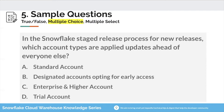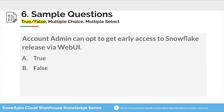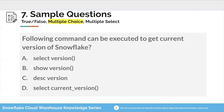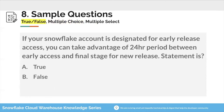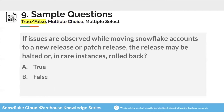Question 5: In the Snowflake staged release process for new releases, which account types are updated ahead of everyone else? Question 6: Account admin can opt to get early access to the Snowflake release via web UI — true or false? Question 7: Which following command can be executed to get the current version of Snowflake? Snowflake has control functions to get metadata about tables, queries, and the Snowflake environment — only one answer is correct. Question 8: If your Snowflake account is designated for early release access, you can take advantage of a 24-hour period between early access and the final stage for a new release — true or false? Question 9: If issues are observed while moving Snowflake accounts to a new or patch release, the release may be halted or in rare instances rolled back — true or false? Question 10: New release does not include any bug fixes — true or false?